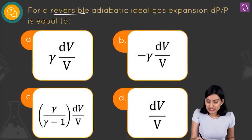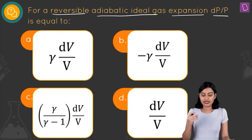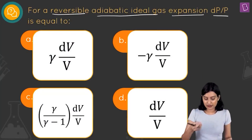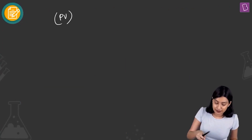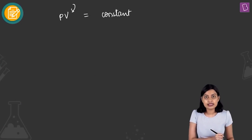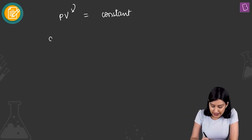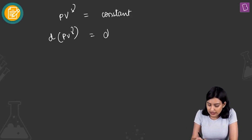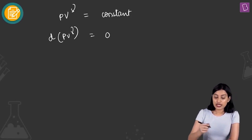For a reversible adiabatic ideal gas expansion, we need to find dp/p. For an adiabatic process, PV^γ = constant. Differentiating both sides: d(PV^γ) = d(constant) = 0. Expanding using the product rule — d(xy) = x·dy + y·dx — we apply this to PV^γ.